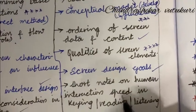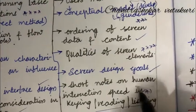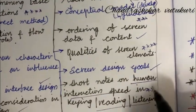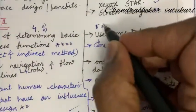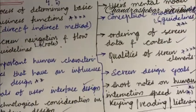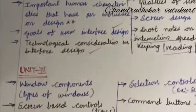Short notes on human interaction speed in keen reading and listening. Such type of human interaction speed is the topmost question which may occur in 5A or 5B this time. Do not skip any part of the video. The highlighted points are very important here.